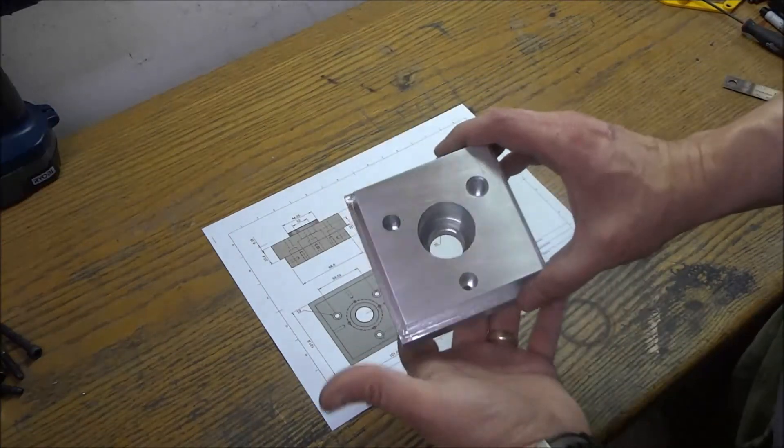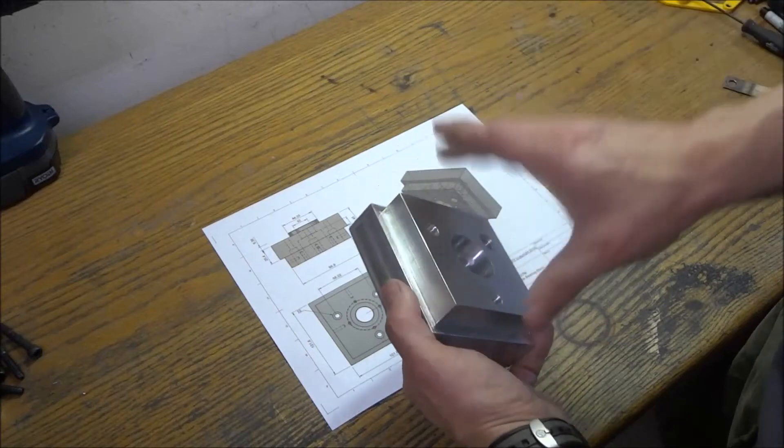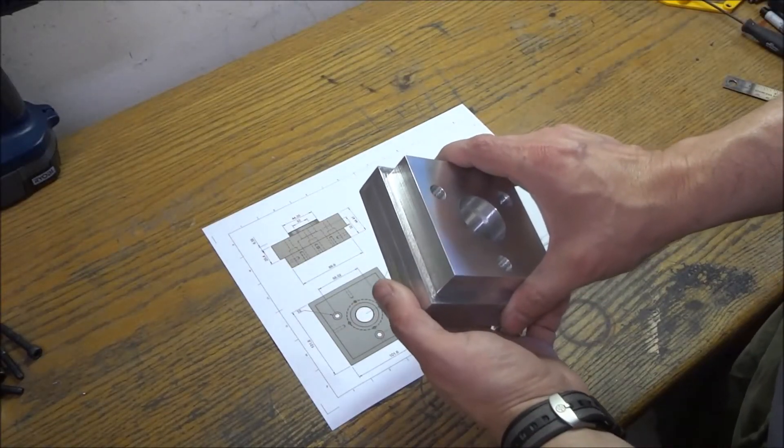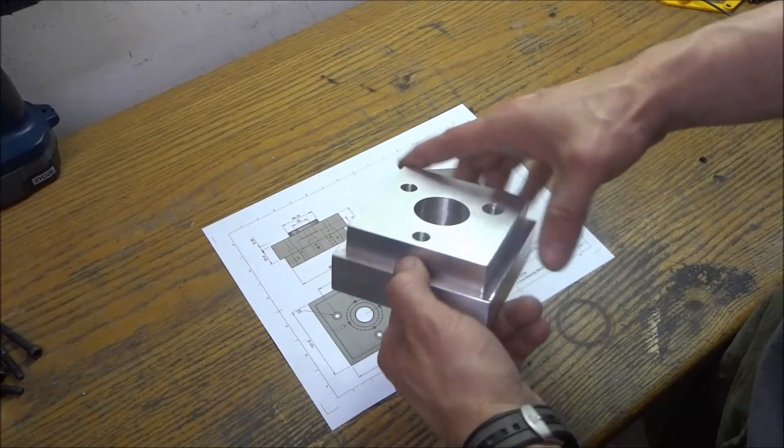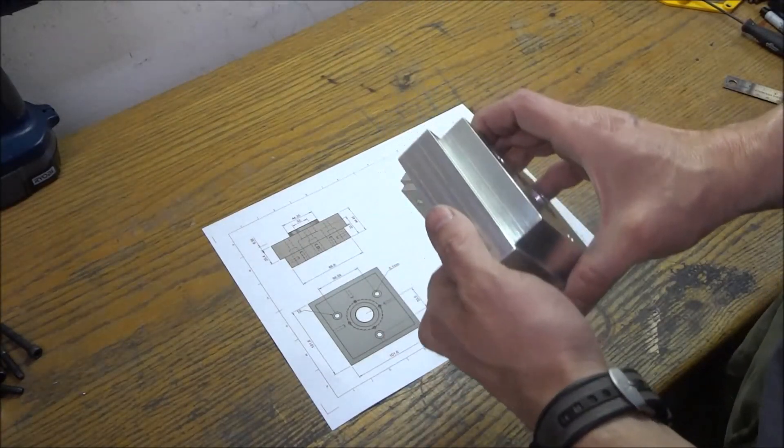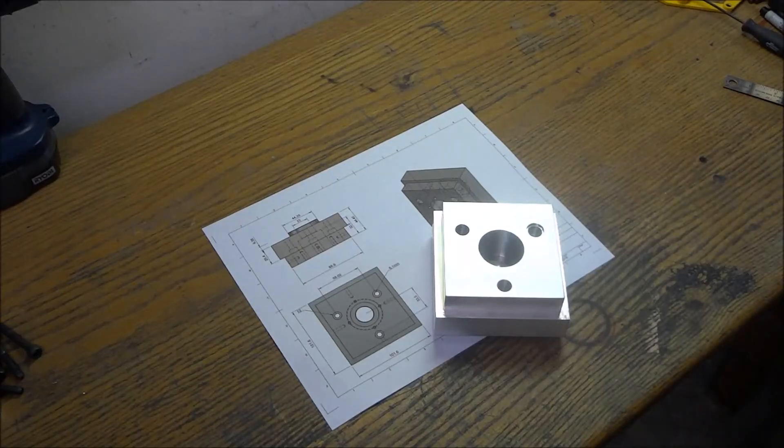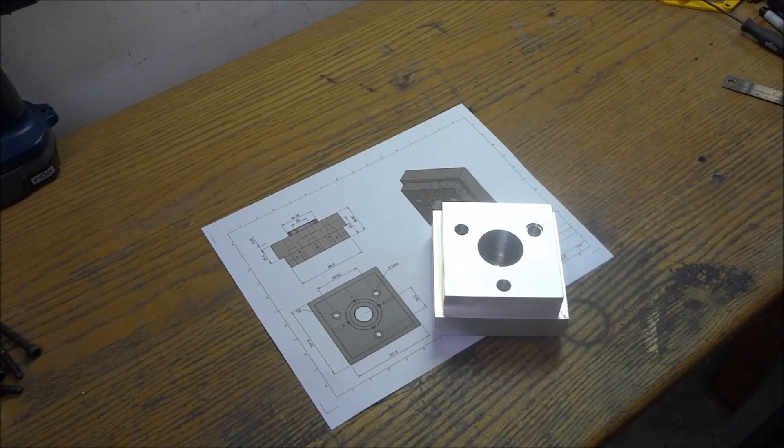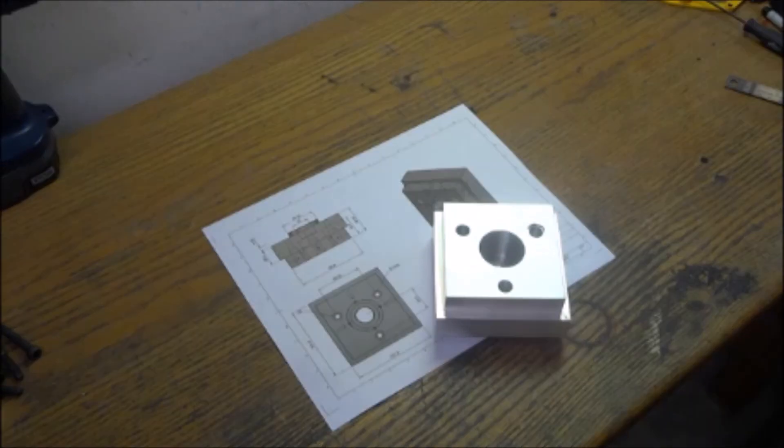This finishes up the bearing block. Now we need to do our stepper spacer and then we'll come back and bore these holes and then also do our stepper mount. So in the next video we'll work on our spacer, our stepper mount, and get everything put together and finish this z-axis mount up.